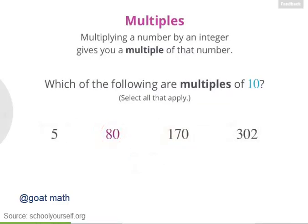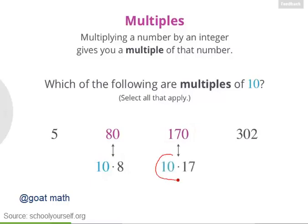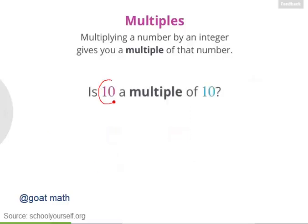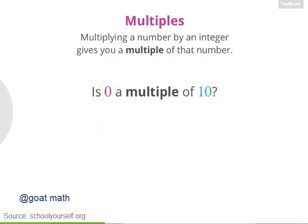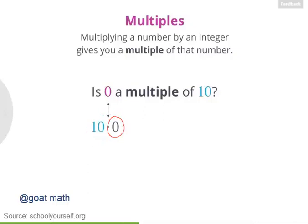Nicely done. 80 is a multiple of 10 because 80 equals 10 times 8. And 170 is also a multiple of 10 because it equals 10 times 17. 5 and 302 are not multiples of 10. So next, would you say that 10 is a multiple of 10? Is there an integer you can multiply by 10 to get 10? Right, 10 is a multiple of 10 because 10 equals 10 times 1, and 1 is an integer. In general, every number is a multiple of itself. Next, what about 0? Is there an integer you can multiply by 10 to get 0? Right again, 0 equals 10 times 0, and 0 is an integer.